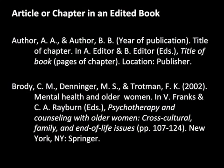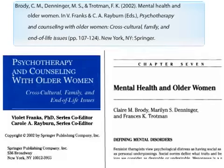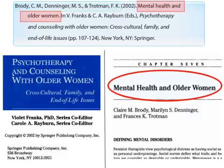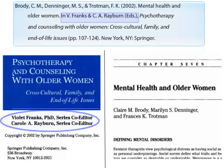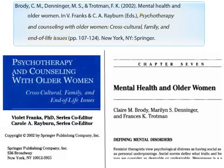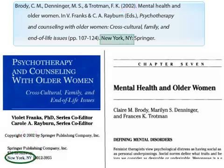Also, use 'Ed.' if there is only one editor. When you list the page numbers, be sure to use the abbreviation 'pp.' In this example, notice where the citation information came from. Authors and title of the book chapter can be found on the chapter page. The editors of the book and the title of the book can usually be found on the front cover, and publication information can be found within the first few inside pages.